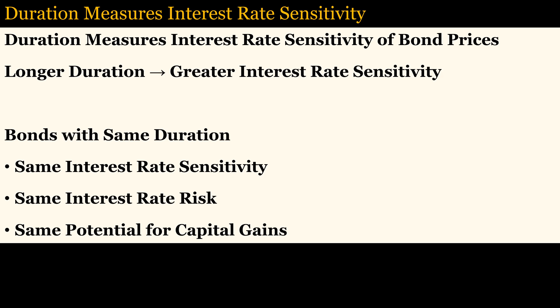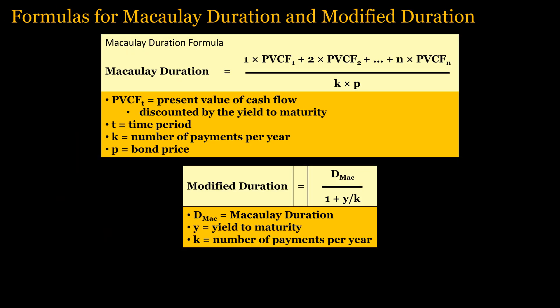Interest rate sensitivity is related to both interest rate risk and the potential for capital gains. Interest rate risk is highest when the federal funds rate is near zero and lowest when interest rates are at their peak. When interest rates are at their peak, bonds have the greatest potential for capital gains, and this potential is commensurate with their duration — the longer the duration, the greater the potential for capital gains. Duration measures interest rate sensitivity more accurately by incorporating the present value of the cash flows of the bond, discounted by the market yield. Think of it as the normalized term of a bond.